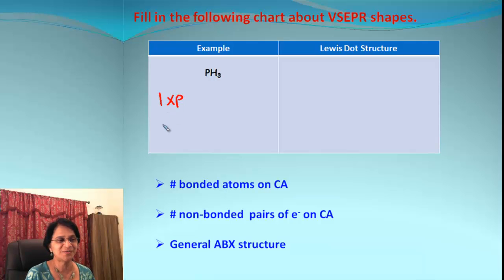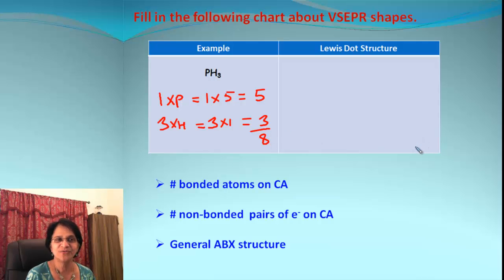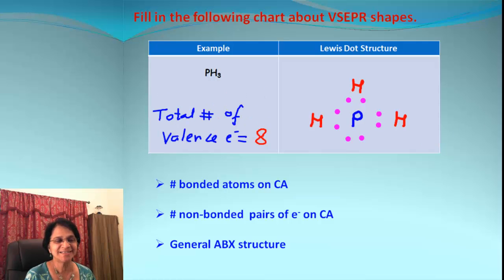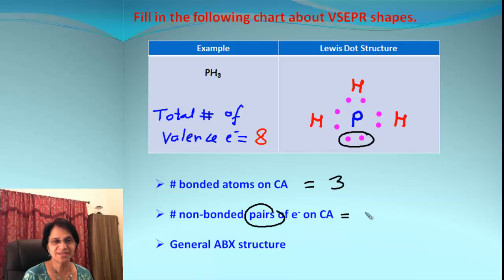Our next molecule is PH₃. We have one phosphorus and three hydrogen atoms. Phosphorus comes from group 15, giving 5 valence electrons. Three hydrogens give 3 electrons. Total: 8 valence electrons. The Lewis dot structure shows phosphorus as the central atom with three hydrogens — and notice there are two electrons which are unshared (a lone pair) on phosphorus.